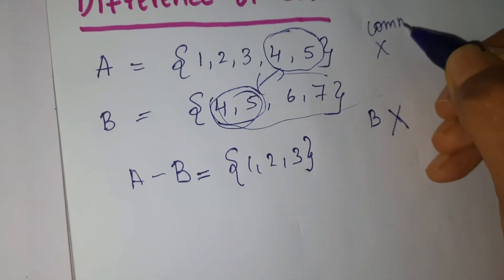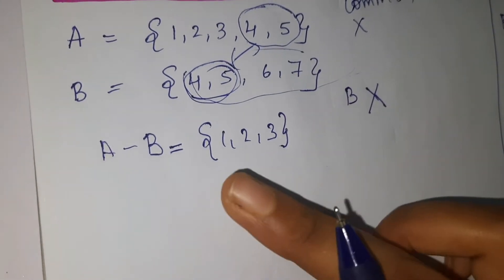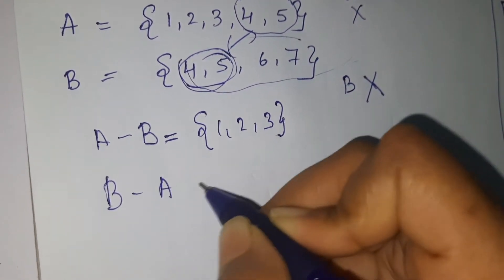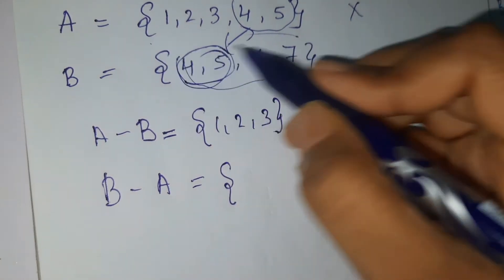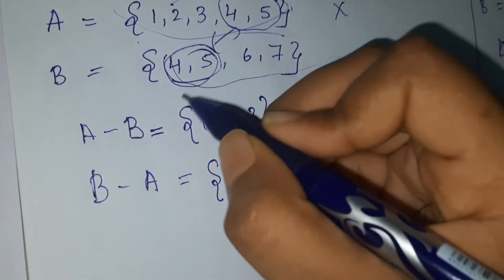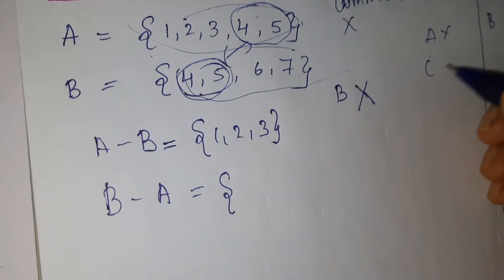If we want B minus A, then what we have to do? We have to remove the A element entirely and the common element between A and B. Then remaining is six and seven.